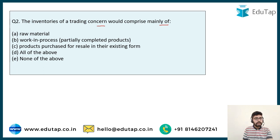Next question: the inventories of a trading concern would comprise mainly of — raw material, work in process or partially completed products, products purchased for resale in their existing form, all of the above, or none of the above?